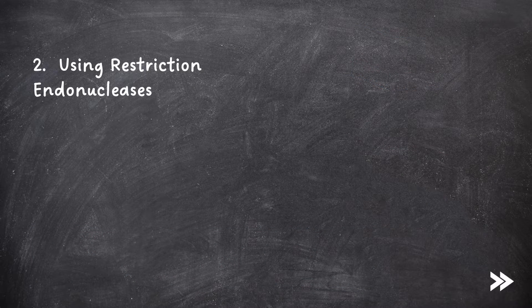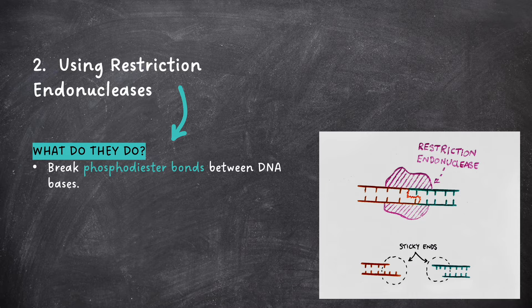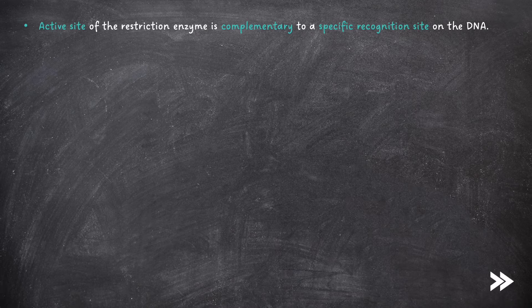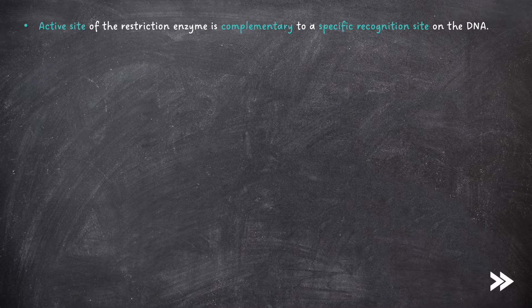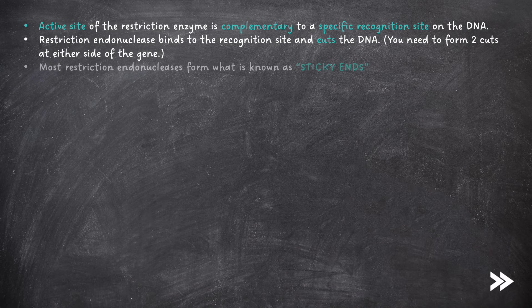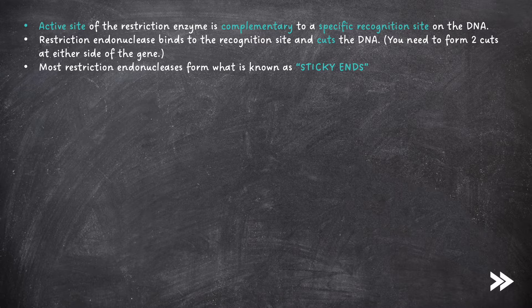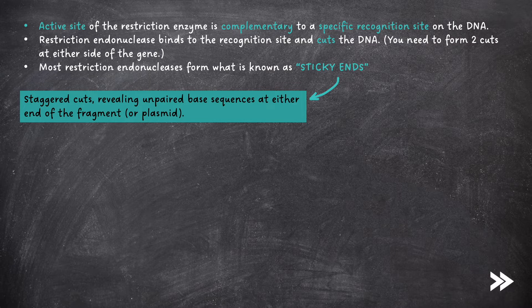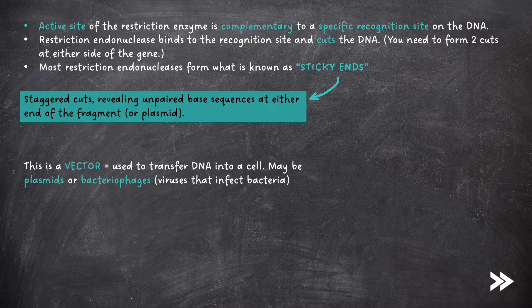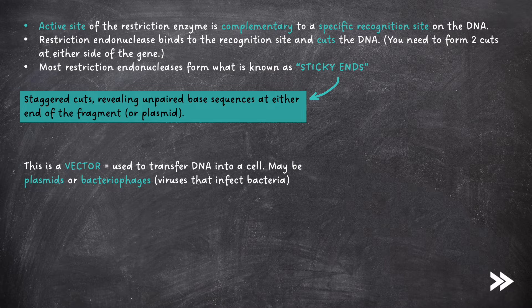Another way to produce DNA fragments is to use restriction endonuclease enzymes. These break phosphodiester bonds between DNA bases and bind to recognition sites. The active site of the enzyme is complementary to a specific recognition site on the DNA. The restriction endonuclease binds to the recognition sites and cuts the DNA. Note that you need to form two cuts at either side of the gene. Most restriction endonucleases form what is known as sticky ends, which are staggered cuts, revealing unpaired base sequences at either end of the fragment or plasmid. Note that the plasmid is known as a vector, which is used to transfer DNA into a cell. Vectors may be plasmids or bacteriophages, which are viruses that infect bacteria.